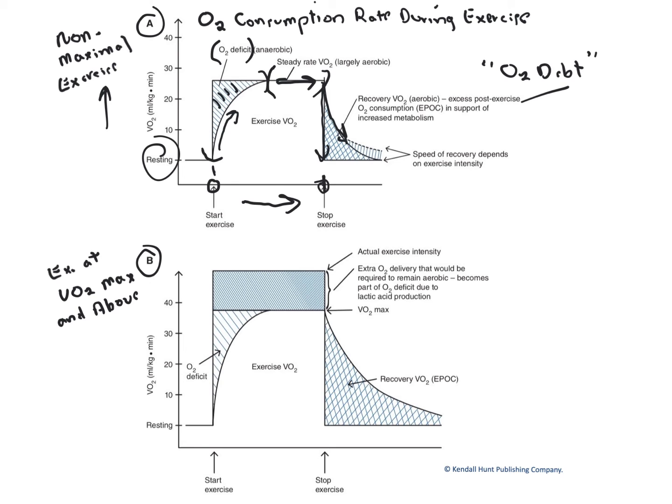Notice that the slope of the recovery curve is affected by exercise intensity. So the higher the exercise intensity was, the more gradual the slope is going to be. Now, jump down and look at graph B, higher level of activity.